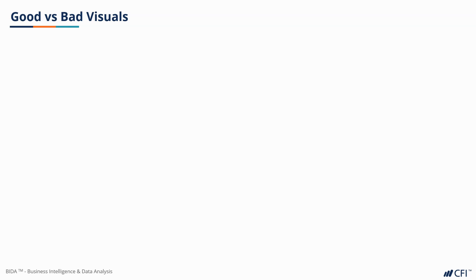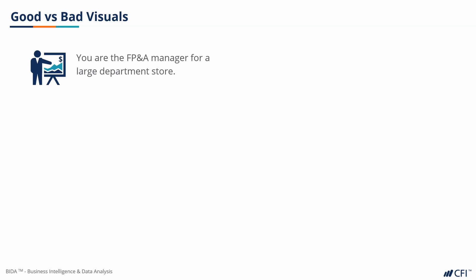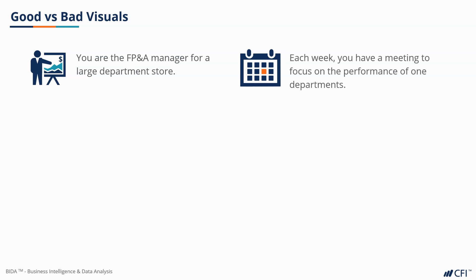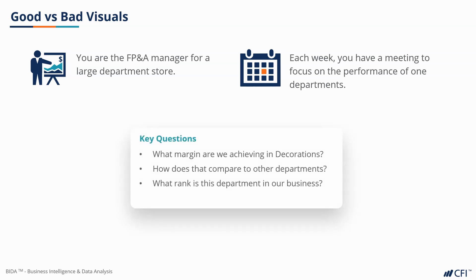BI is ultimately about using data to communicate a message. Let's take a look at a good and a bad example of a visualization. Imagine you're an FP&A manager for a large department store. Each week, you have a meeting to focus on a single department. This week, we're talking about the decorations department. Key questions that regularly arise are: what margin are we achieving in decorations? How does that compare to other departments? And what rank is this department in our business?